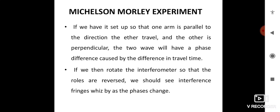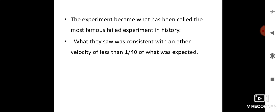This experiment became what has been called the most famous failed experiment in history because the negative results of the Michelson-Morley experiment were consistent with an ether velocity of less than expected, essentially disproving the ether hypothesis.